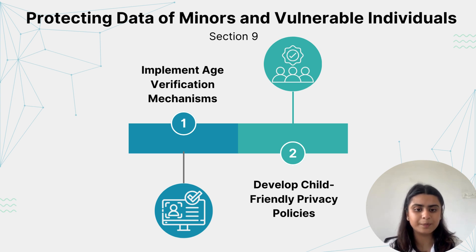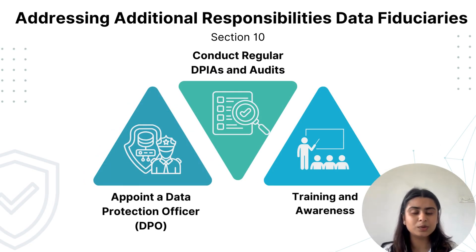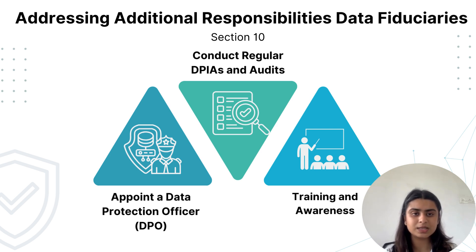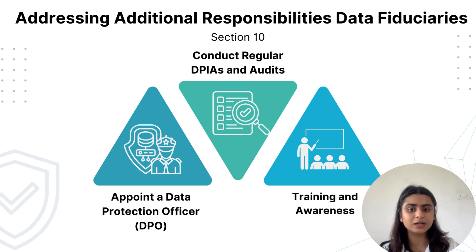Section 10 — here we handle large volumes of sensitive data responsibly. Section 10, Subsection 2, requires appointing a Data Protection Officer to conduct regular assessments and audits. Action steps would be: first, appoint a DPO — a dedicated person responsible for data protection and compliance. For example, a large e-commerce company that processes significant amounts of sensitive data, including customer payment details and personal preferences, has a DPO overseeing data protection practices across global operations.